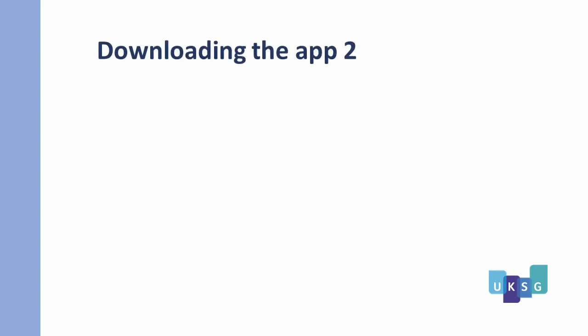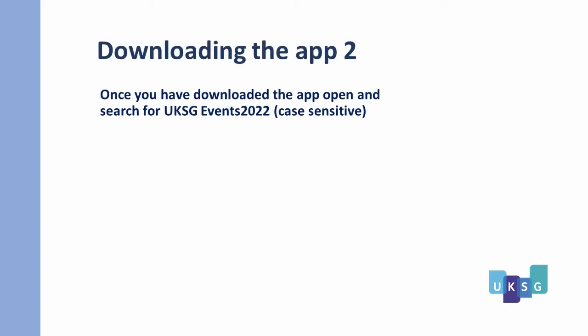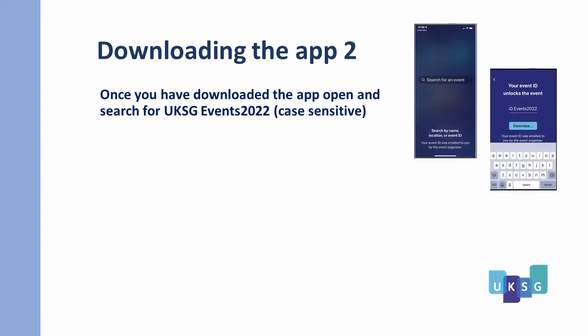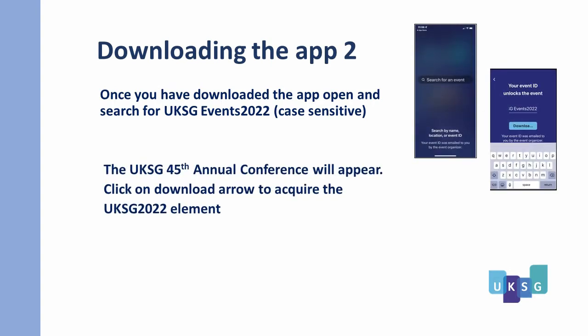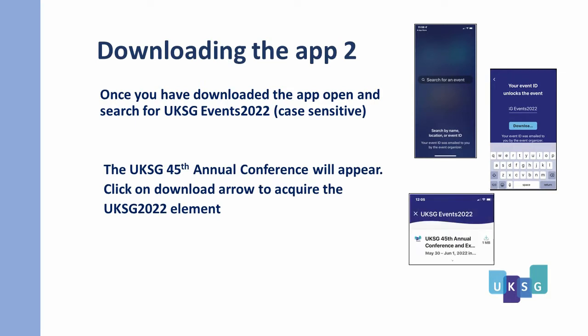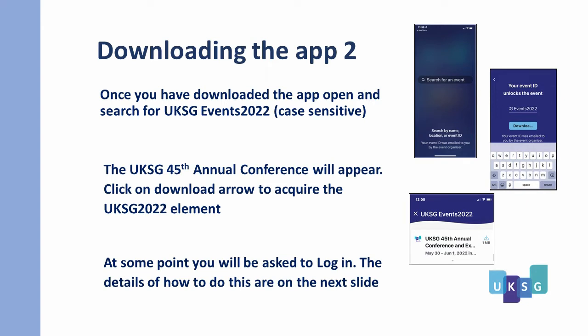Once you have downloaded the app, open and search for UKSG events 2022 — this is case sensitive. The UKSG 45th annual conference will appear. Click on the download arrow to acquire the UKSG 2022 element. At some point you will be asked to log in. The details of how to do this are on the next slide.